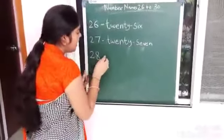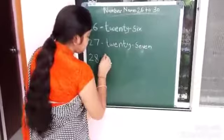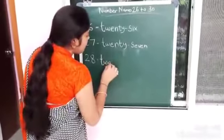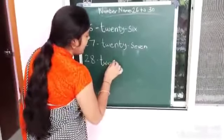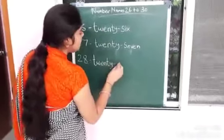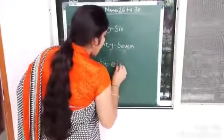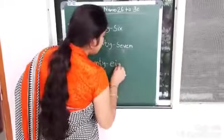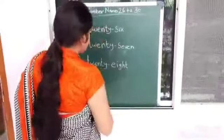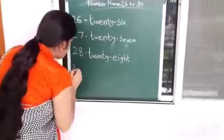28, 28, repeat with me. T-W-E-N-T-Y E-I-G-H-T. Twenty Eight. 8, 28. Repeat with me.